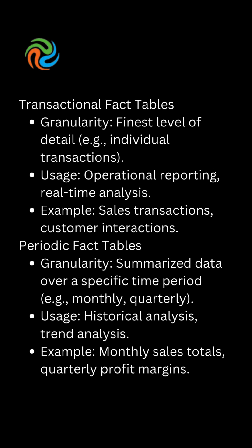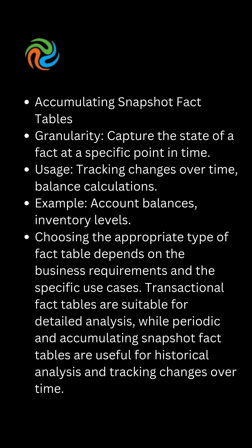Periodic fact tables summarize data over a specific time period, such as monthly or quarterly. Their usage includes historical analysis and trend analysis. Examples include monthly sales totals and quarterly profit margins.